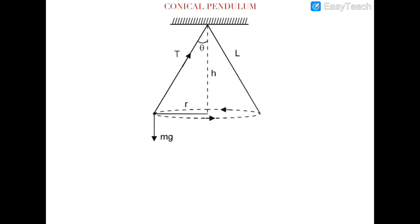In this video we will start with an important topic of circular motion: the conical pendulum. A conical pendulum is a system in which a simple pendulum is connected to a rope and is being rotated in a horizontal circle, forming a virtual cone. Let's suppose that this is rotating with the angular velocity omega, and therefore a centripetal force of mr omega squared will be acting outward.